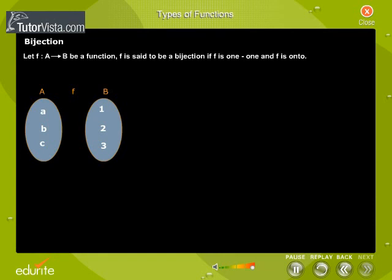Whenever the function is a bijection, the two sets, domain and co-domain, must have the same number of elements.